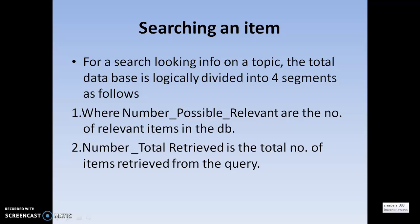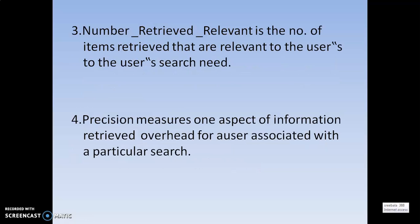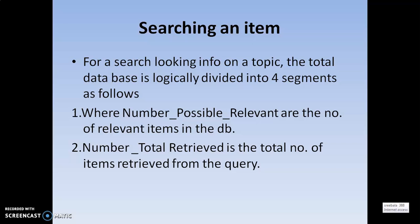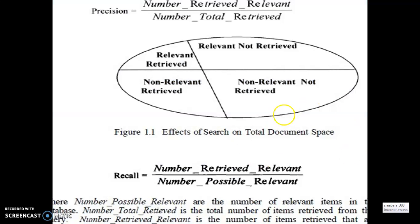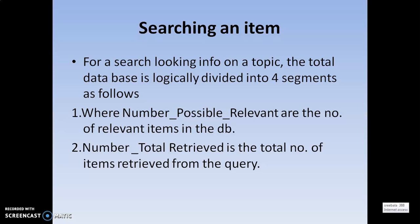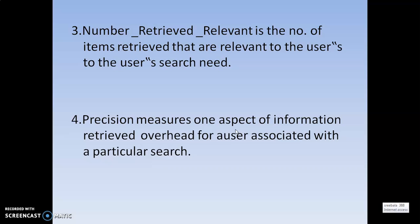For a search looking for information on a topic, the total document space is divided into four different segments. The number of possible relevant items, the number of relevant retrieved items, and the number of total retrieved is the total number of items retrieved from the query. Number of retrieved relevant is the number of items retrieved that are relevant to the user's search. Precision measures one aspect of information retrieval overhead for a user associated with a particular search.